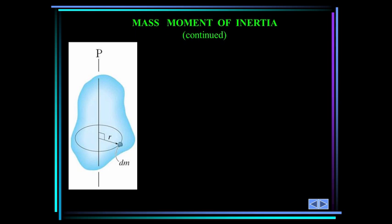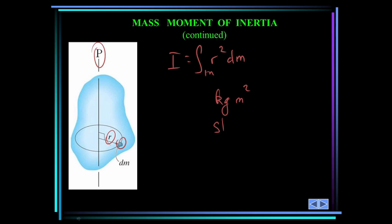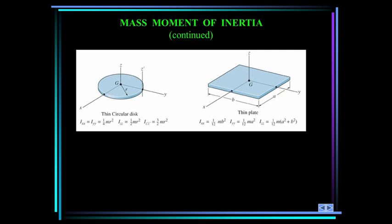We use this most often when analyzing rotational motion. Consider this rigid body shown in blue and the arbitrary axis P. The mass moment of inertia about the P axis is defined as I is equal to the integral of R squared dm, where M is mass and R is the distance from the axis to the differential element dm. The mass moment of inertia is always a positive quantity, and it has units of kilogram meter squared, or slug foot squared.